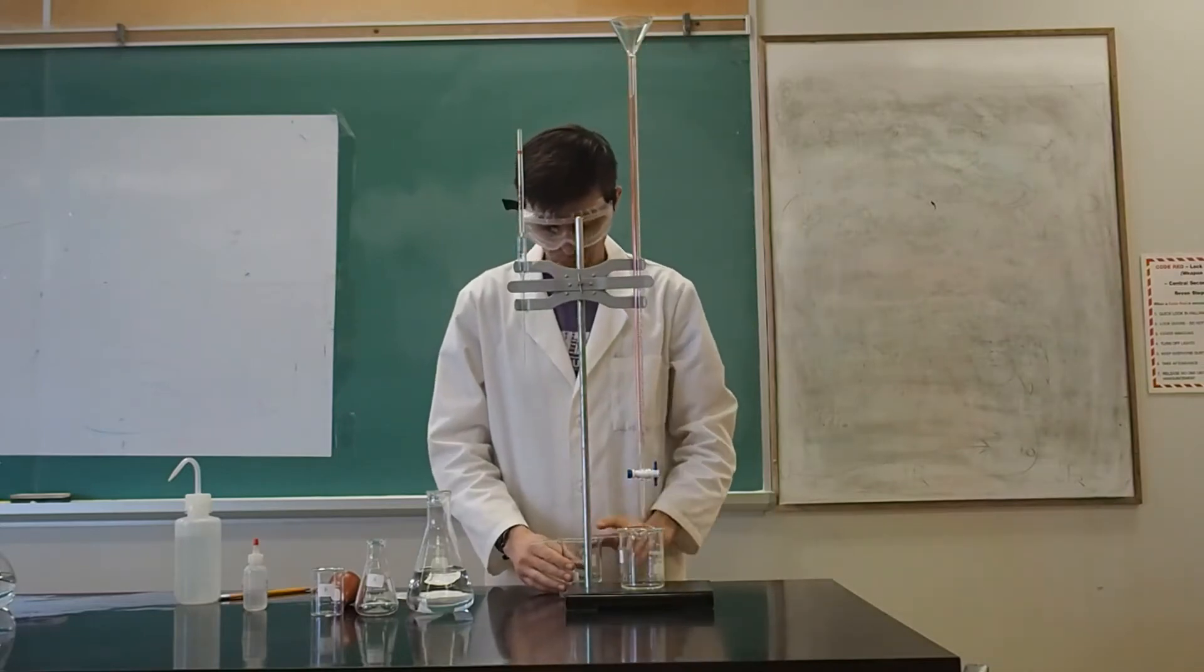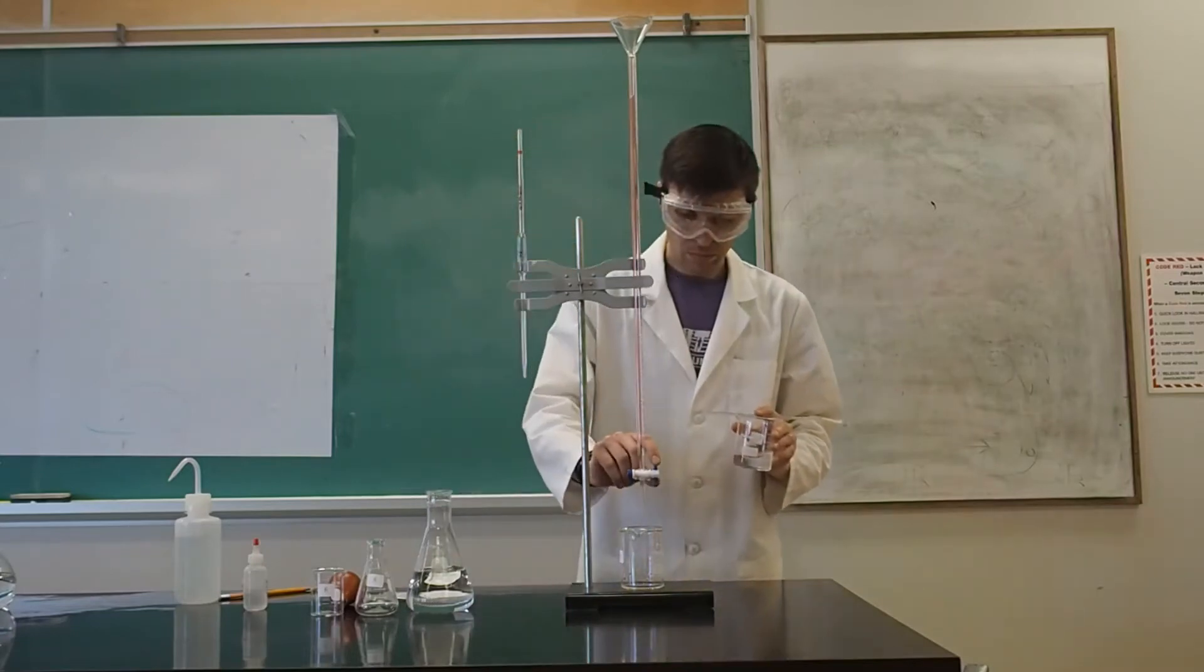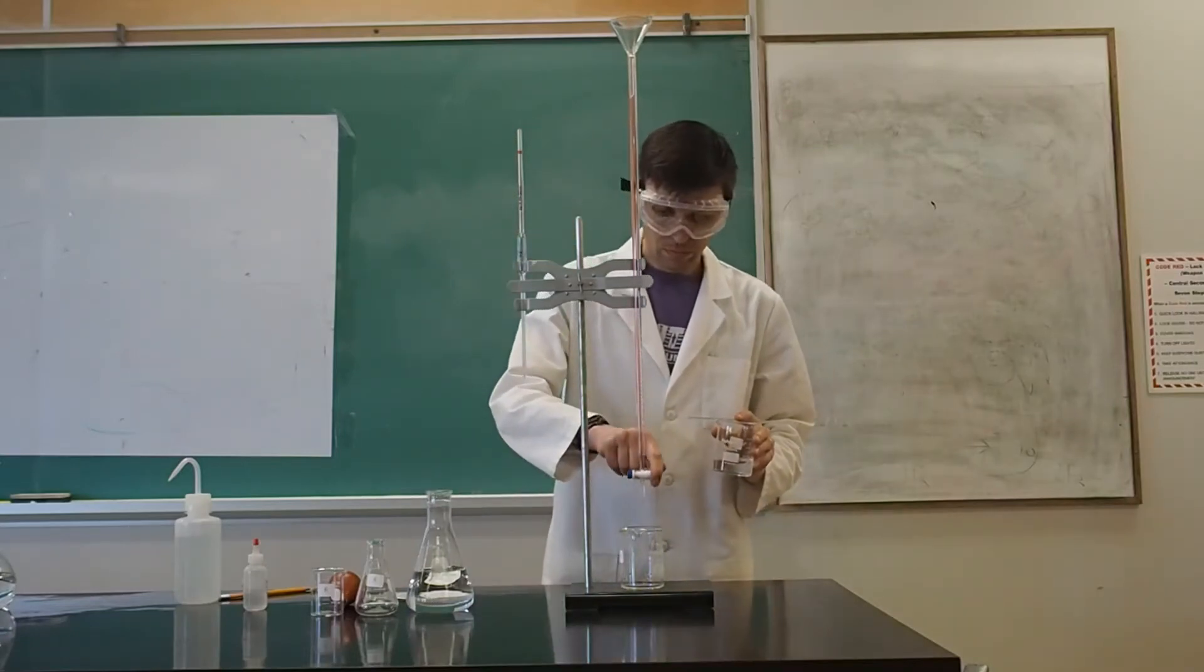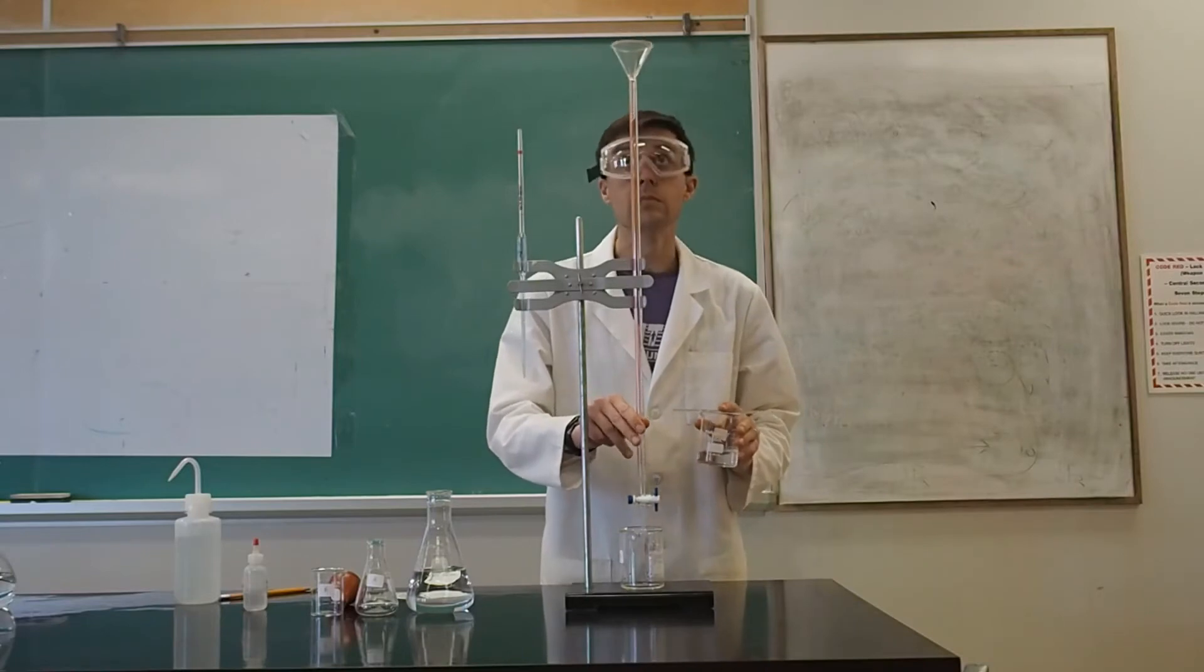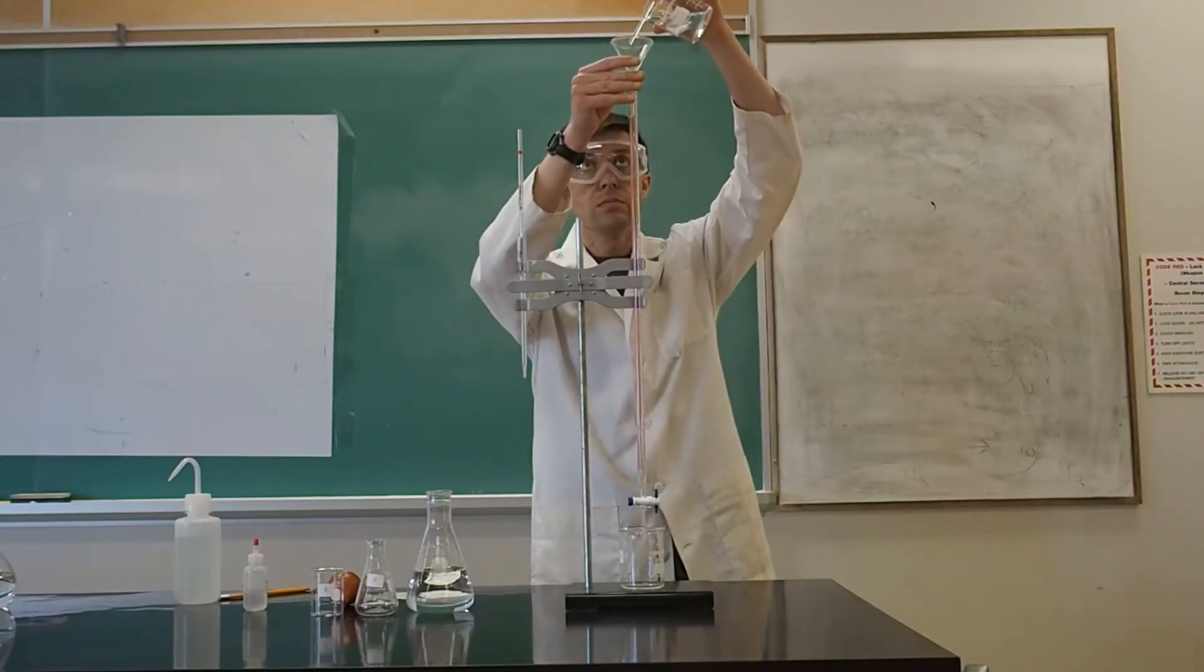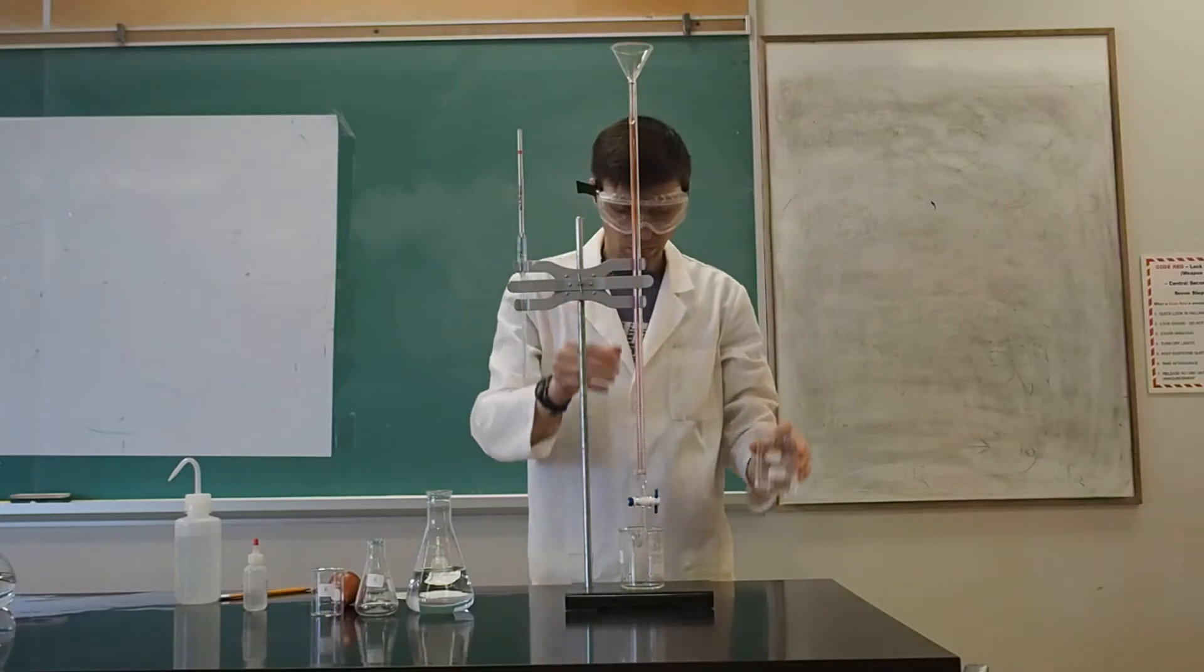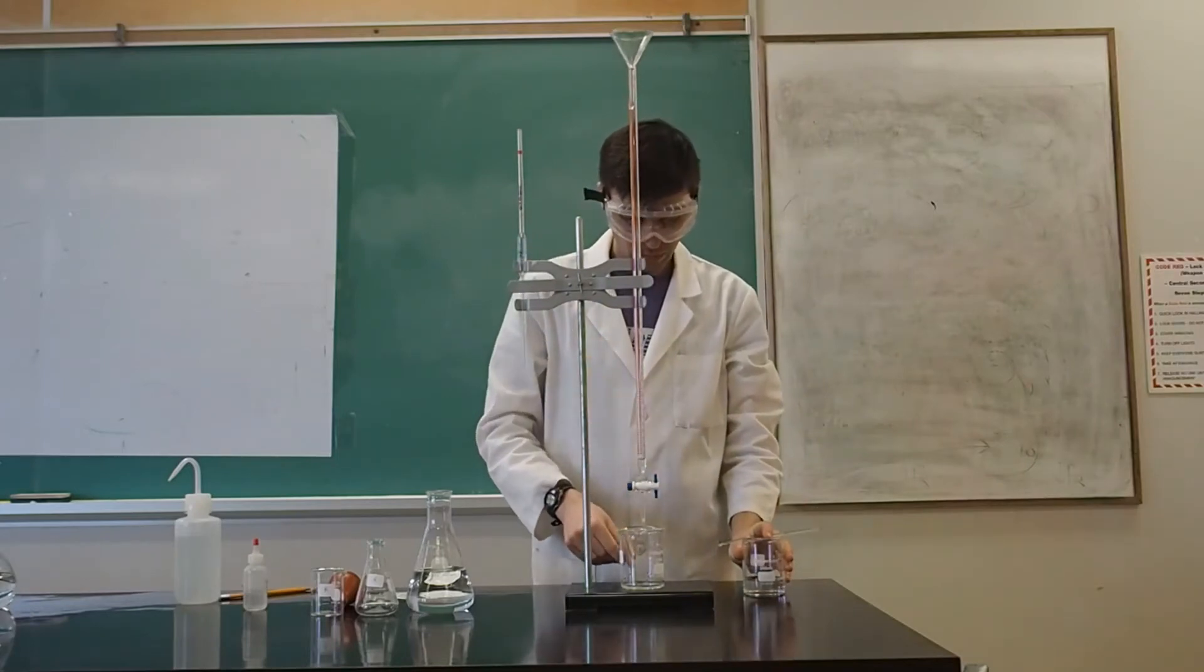Before filling the burette, it must be primed with the titrant. To prime the burette, pour a small amount of the titrant into the burette. Do not pour directly from the stock bottle. Instead, transfer the solution to a beaker, and use the proper pouring technique with a glass rod and funnel. Remember to lift the funnel as you pour.